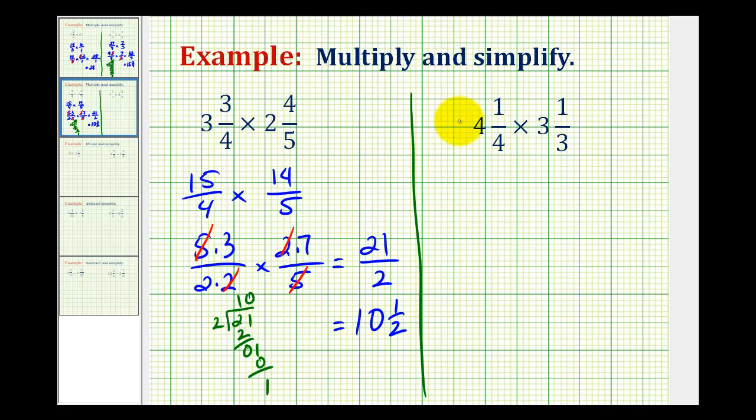Let's take a look at one more example. Again, the first step will be to rewrite these as improper fractions. So here we'll have four times four, sixteen, plus one, so we'll have seventeen-fourths times.